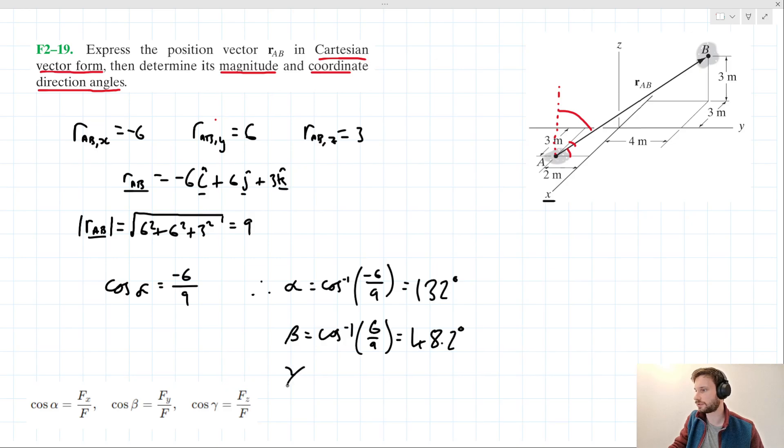And for γ, we can say this is cos⁻¹(3/9) in this case.